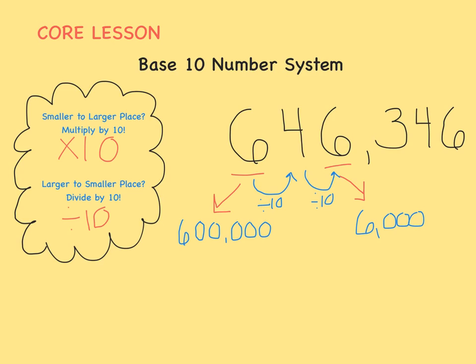Well, I see a 0 in this 10 and a 0 in this 10, so that's two 0s or 100. 600,000 divided by 100 equals 6,000. Remember, we can always go the opposite direction, too, using multiplication. 6,000 times 100 equals 600,000.